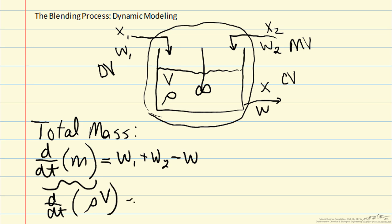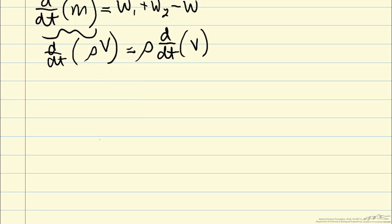And because density was assumed to be constant we can pull it out of the time derivative. And we just have volume inside now. So now we can write our total mass equation as rho dV dt equals W1 plus W2 minus W. Now this will tell us about how volume change, which is depending on flow rates in and out, but it doesn't tell us about our control variable, our mass fraction X.